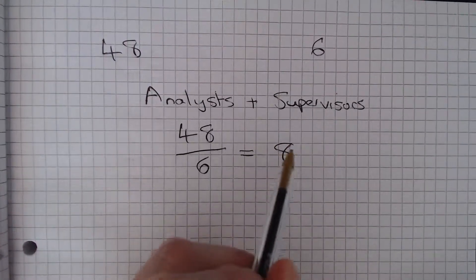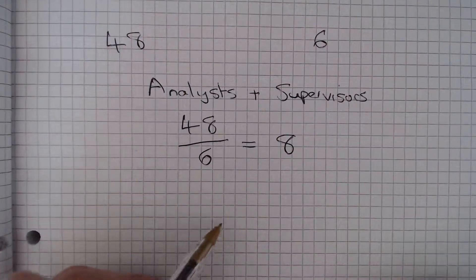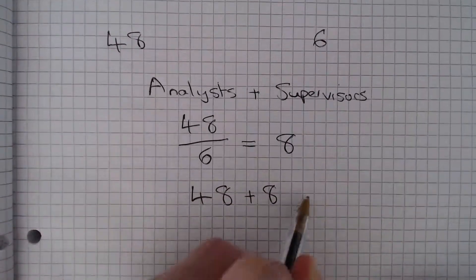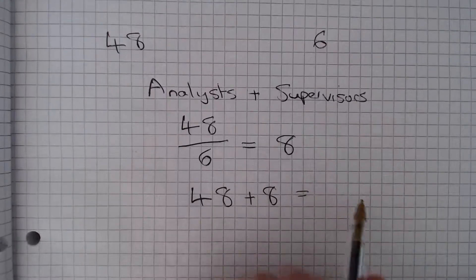We have 8 supervisors. To answer the question, we add 48 and 8 together, which equals 56.